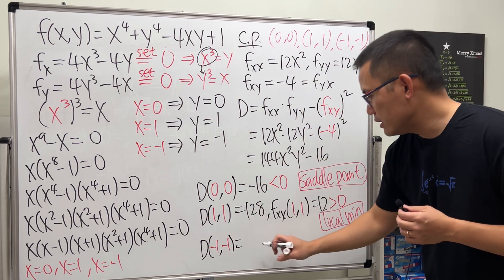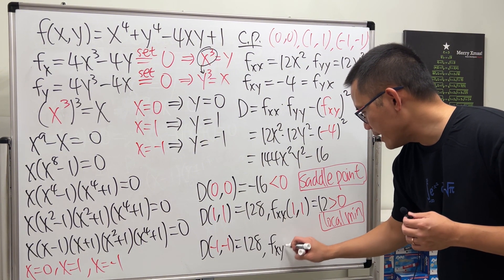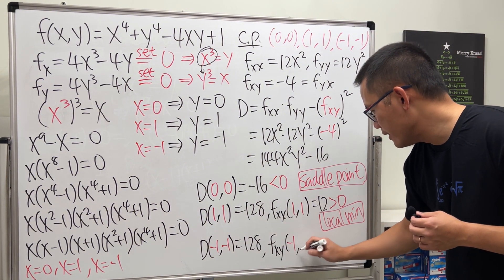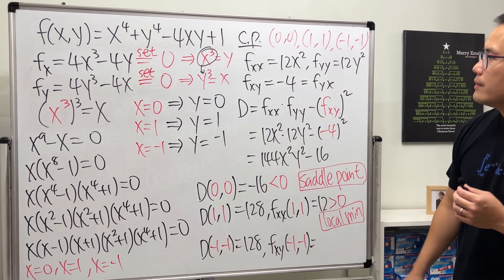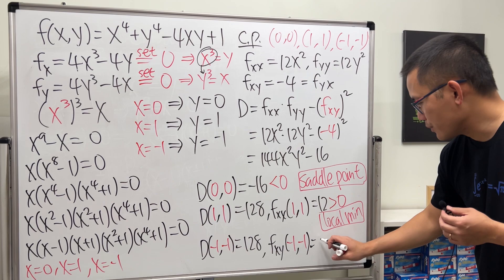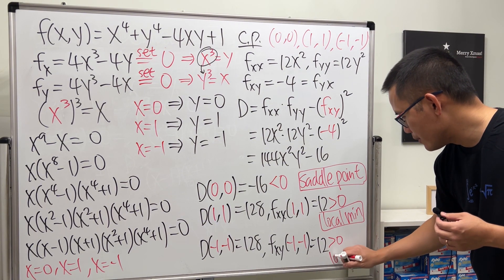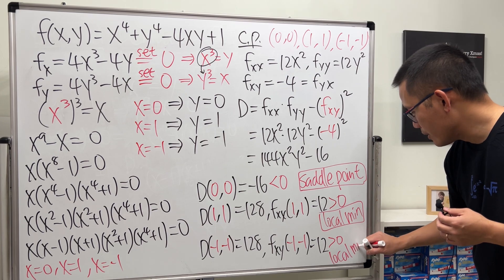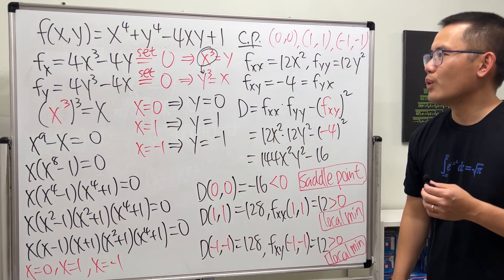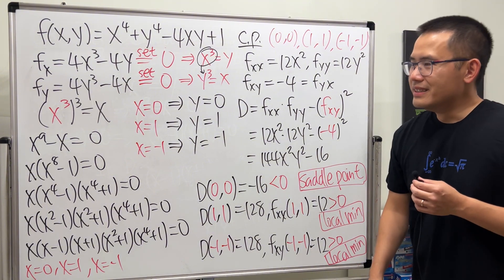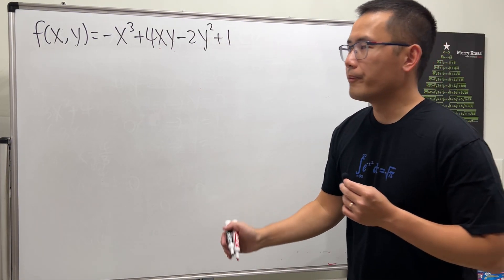Finally, D(−1, −1): plugging in, we also get 128. And f_xx at (−1, −1) = 12(−1)² = 12, which is also positive. So we also have a local minimum at (−1, −1).